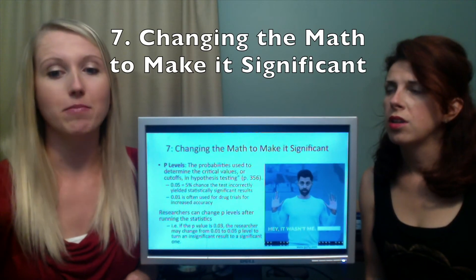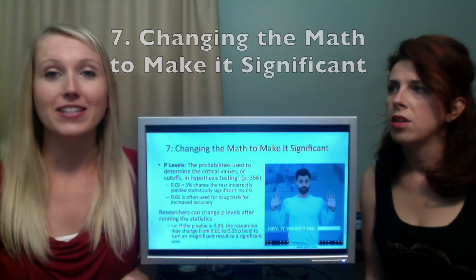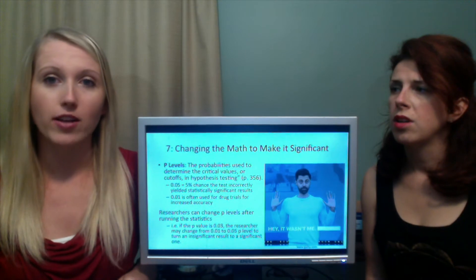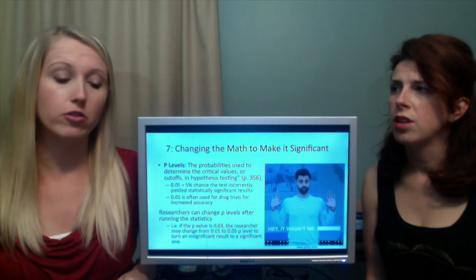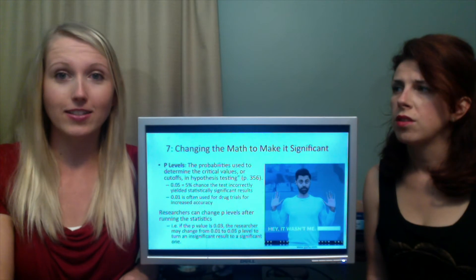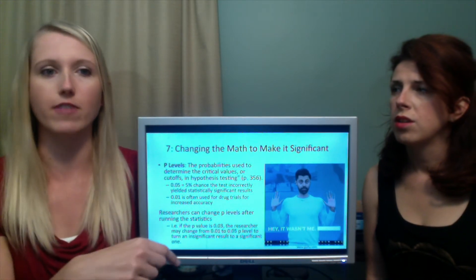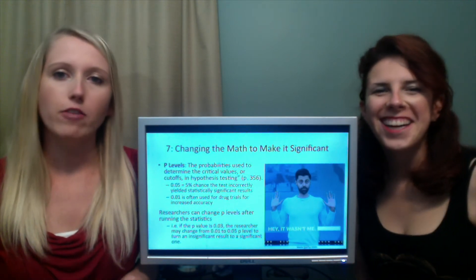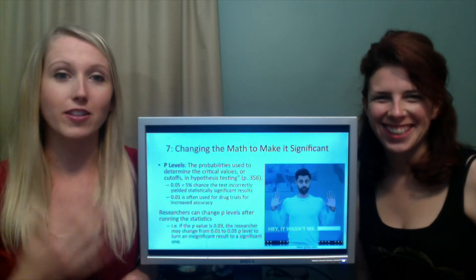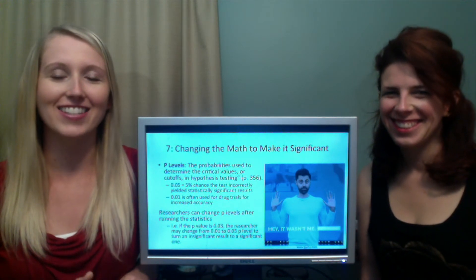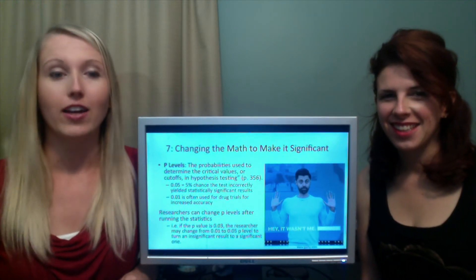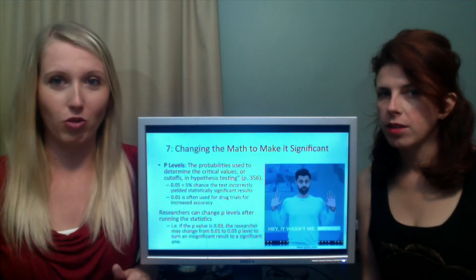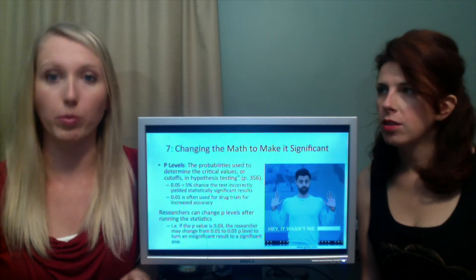Changing the math to make it significant. This is terrible, but this does happen. They may change the type of statistics they run. They may change their parameters. There are certain parameters to say it's statistically significant or it's not significant. It's called a P-level for experiments. Basically, P-level is pretty common to be 0.05, which means there's a 5% chance the test is wrong. For medication, it's usually 0.01 because you don't want to risk being wrong. So there's a 1% chance that you're wrong.